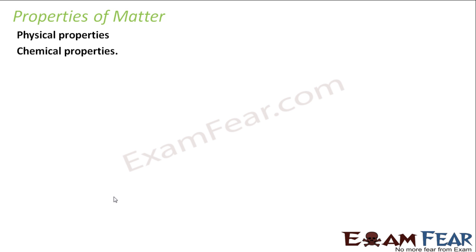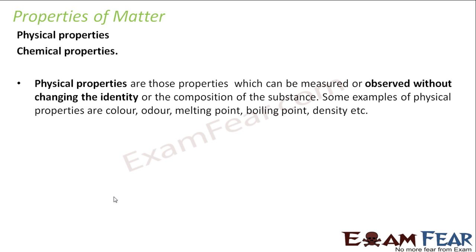We'll talk about physical and chemical properties. Physical properties are those properties which can be measured or observed without changing the identity of a matter.